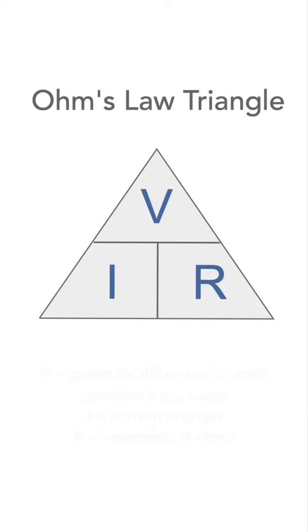Covering up or highlighting the variable you want lets you see the equation. Cover up V and the two other variables I and R are at the bottom.